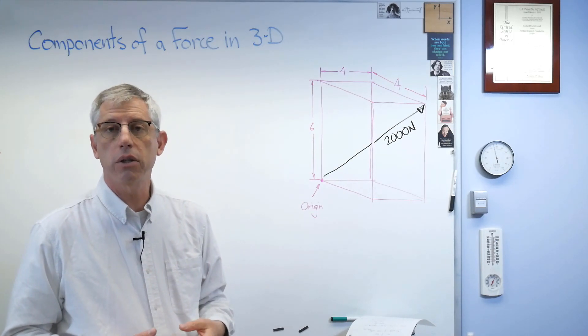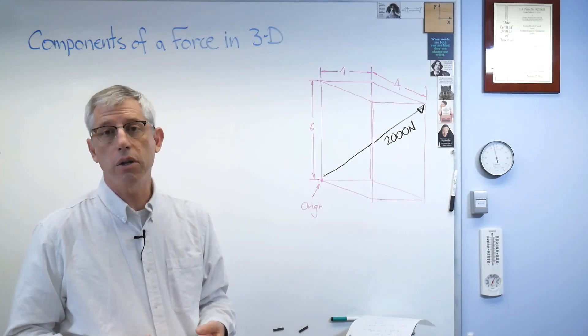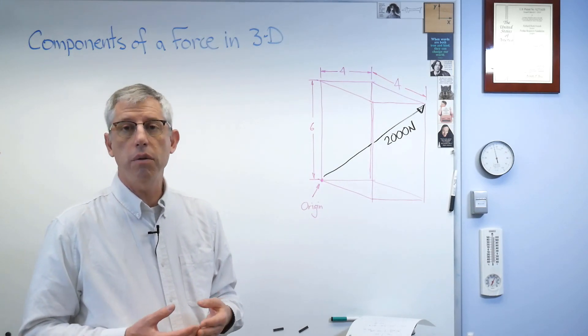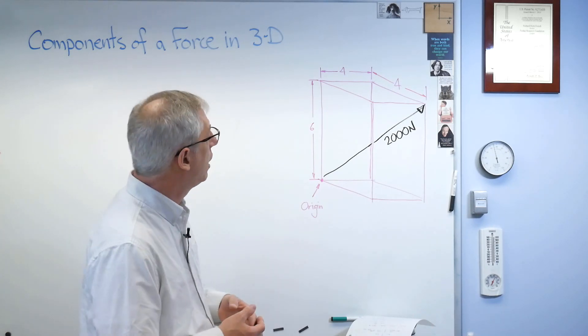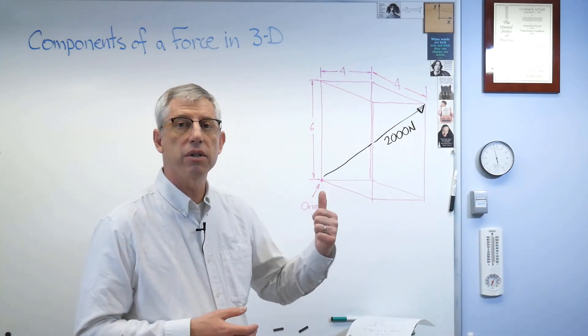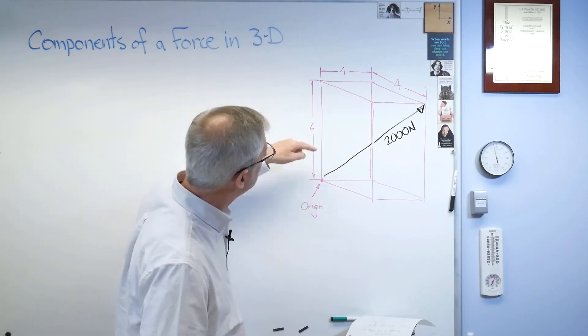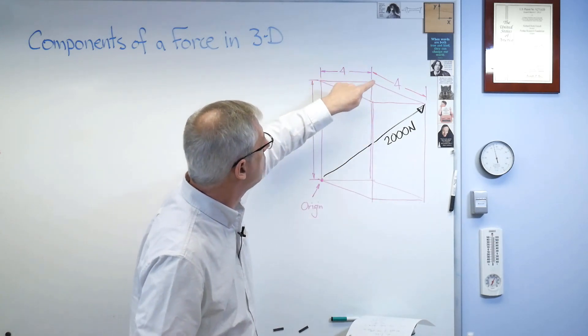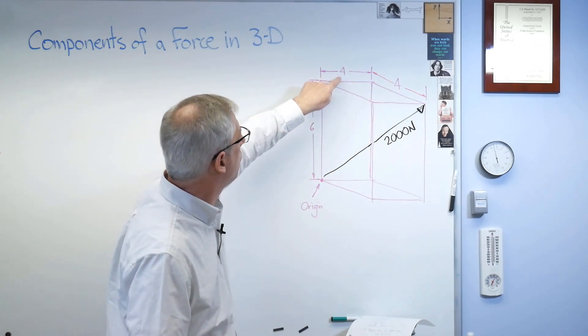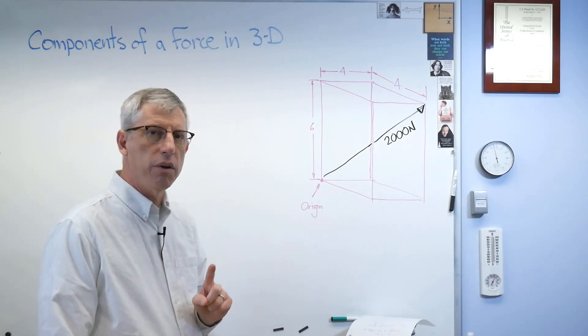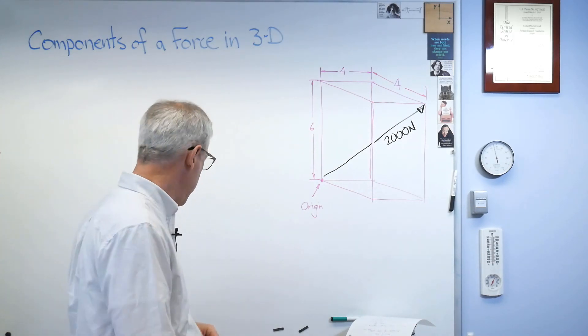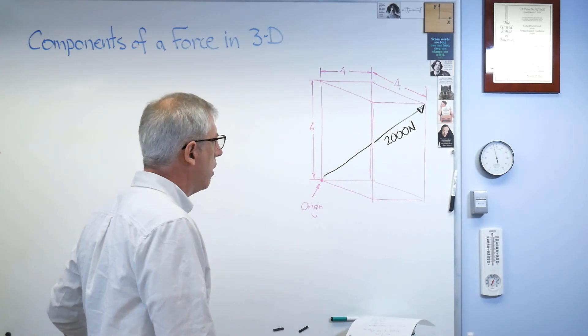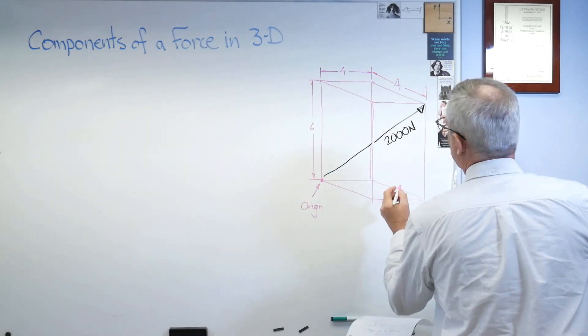And the way I define the direction in 3 dimensions is akin to how you do it in 2 dimensions. In 2 dimensions, there'd be a force triangle. Well, now our force triangle is in 3 dimensions. So I drew a cube here, and I made some proportions here. 4, 4, and 6.